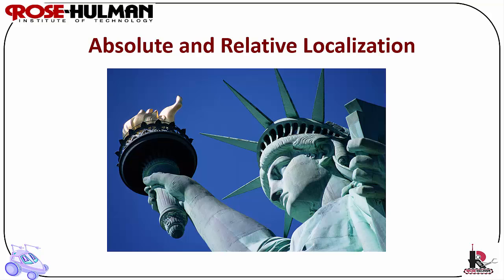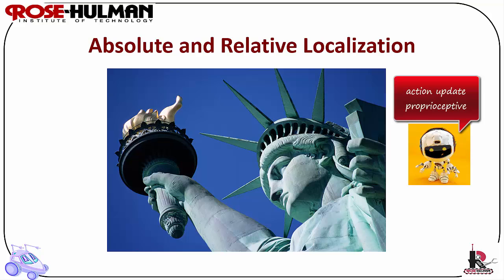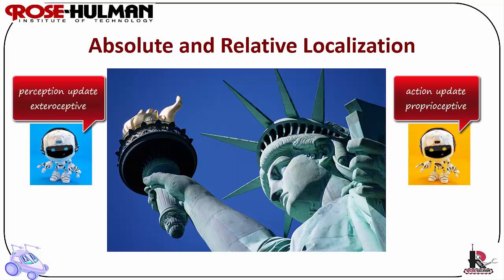Most robotics research seems to focus on this. The process of updating a robot's position based upon proprioceptive and exteroceptive sensor values is separated logically into a general two-step process. Action update is proprioceptive and represents the application of some action model by the robot. Perception update is exteroceptive and represents the application of some perception model to the robot.